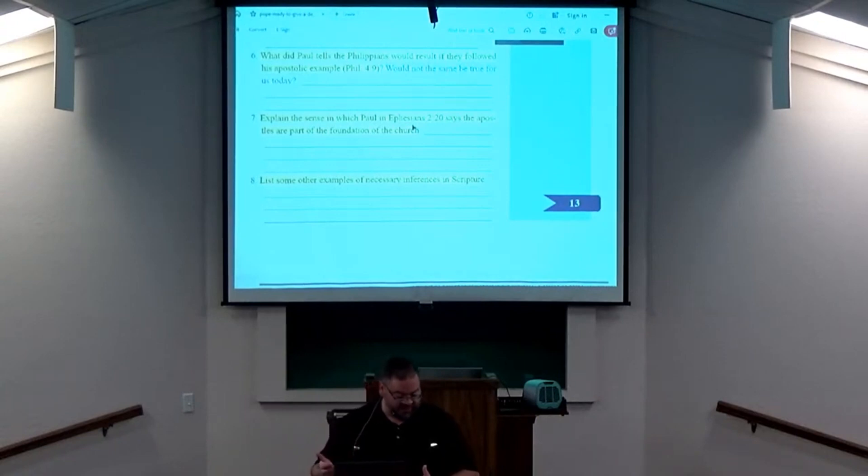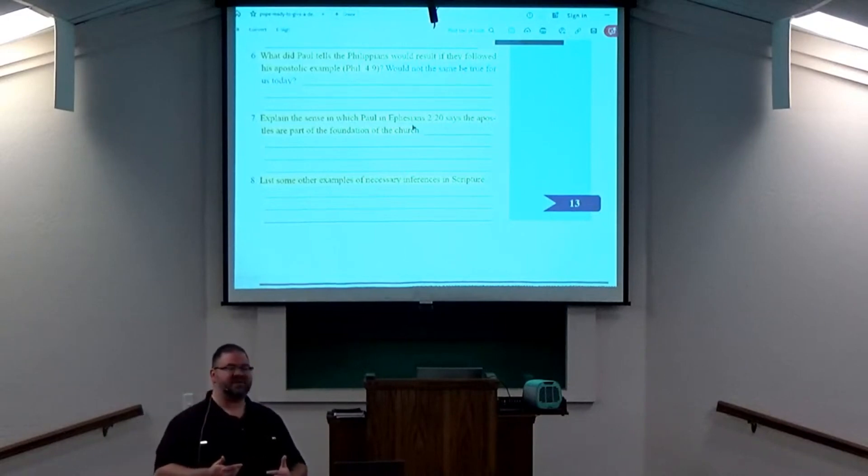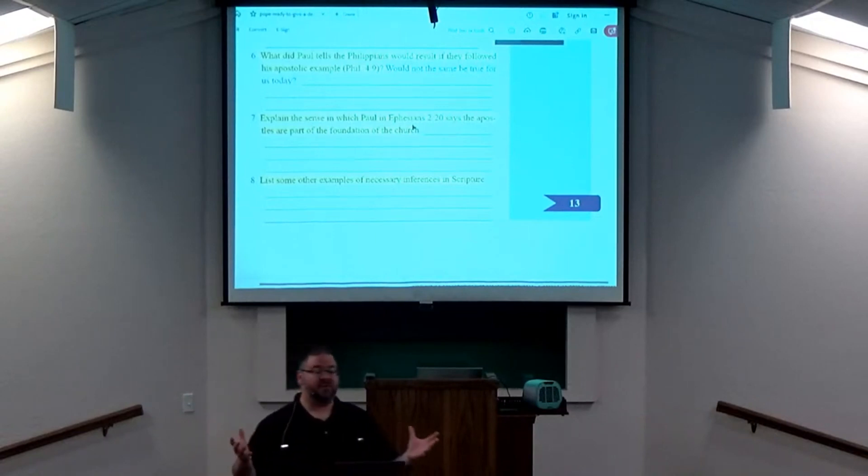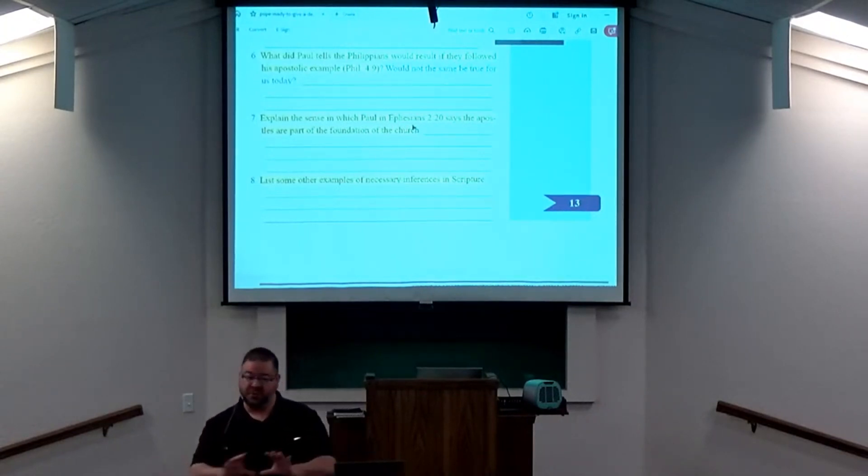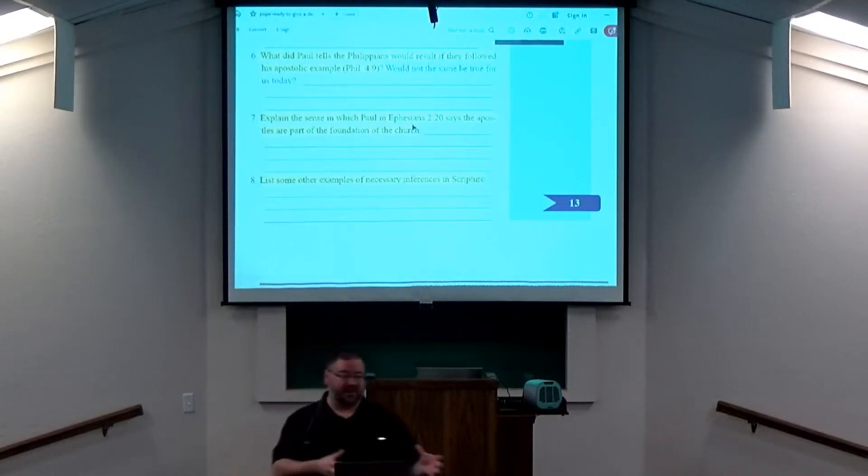Matthew chapter 28, verse 19. Jesus says, go into all the world. What's a necessary inference there? Mode of travel. Does Jesus care how you get there? He doesn't care how you get there. You go. Whatever means you have at your disposal, you go. That implied authority and necessary inference go hand in hand with that example. You go into all the world. Therefore, the necessary inference is, however I can get there, is part of that authority given to us in Scripture.